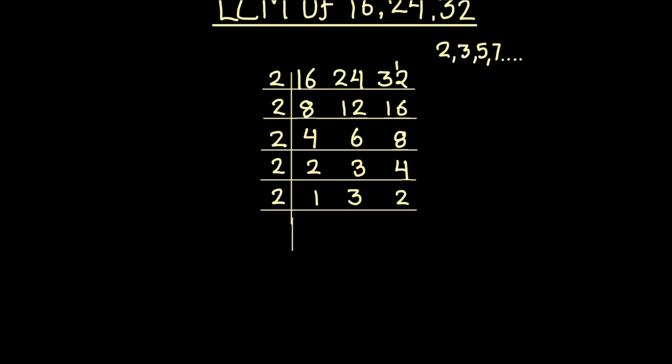Now dividing again by 2: 2 becomes 1, 3 is not fully divided so we write it as is, and 2 times 1 is 2. Then we divide by 3: 1 stays as is, 3 times 1 is 3, and the last number becomes 1. Now all three numbers are fully divided.